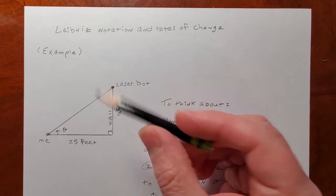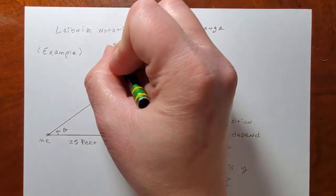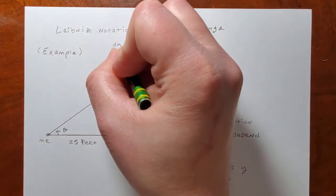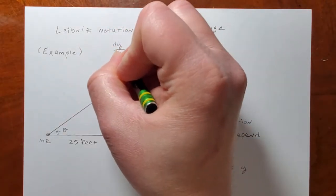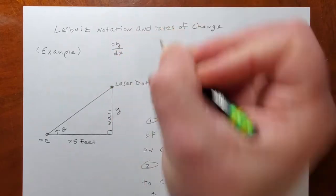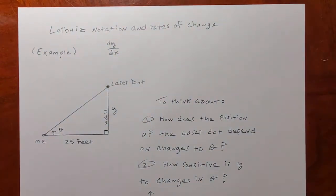Leibniz notation is like when we say for the derivative that it's dy over dx instead of saying it's y prime.